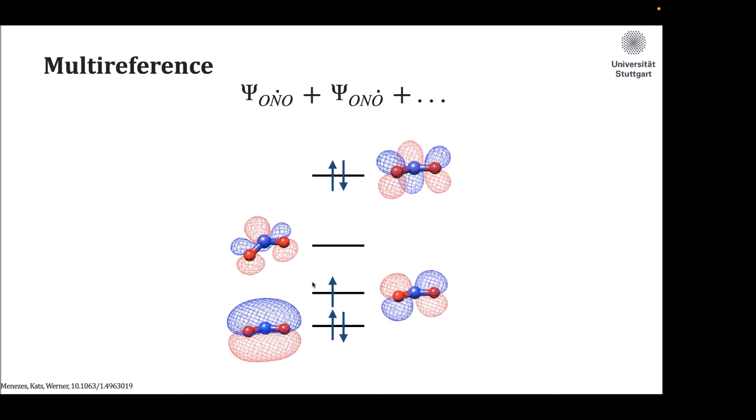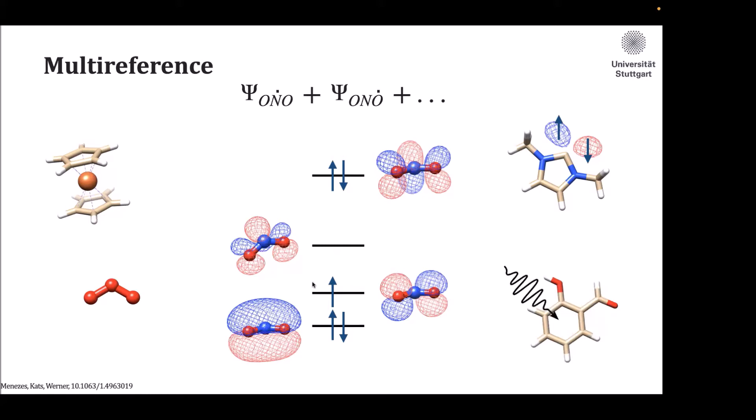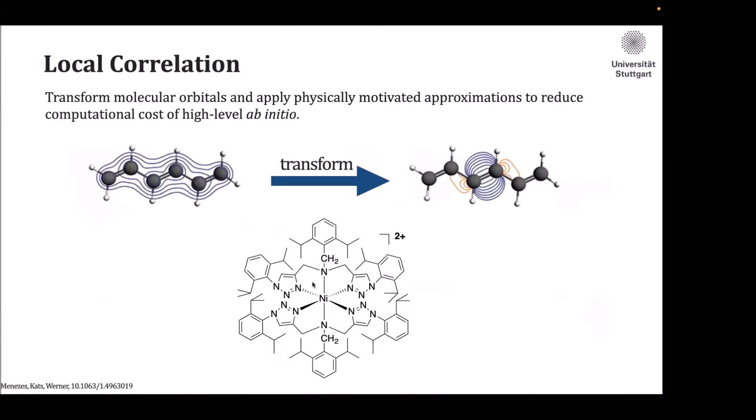Multi-reference is a molecule that cannot be described by a single electronic configuration. Typical cases are nitrogen dioxide, ozone, transition metal complexes with variable d orbital occupation, carbenes, and electronic excited states, which are the main applications of these methods.